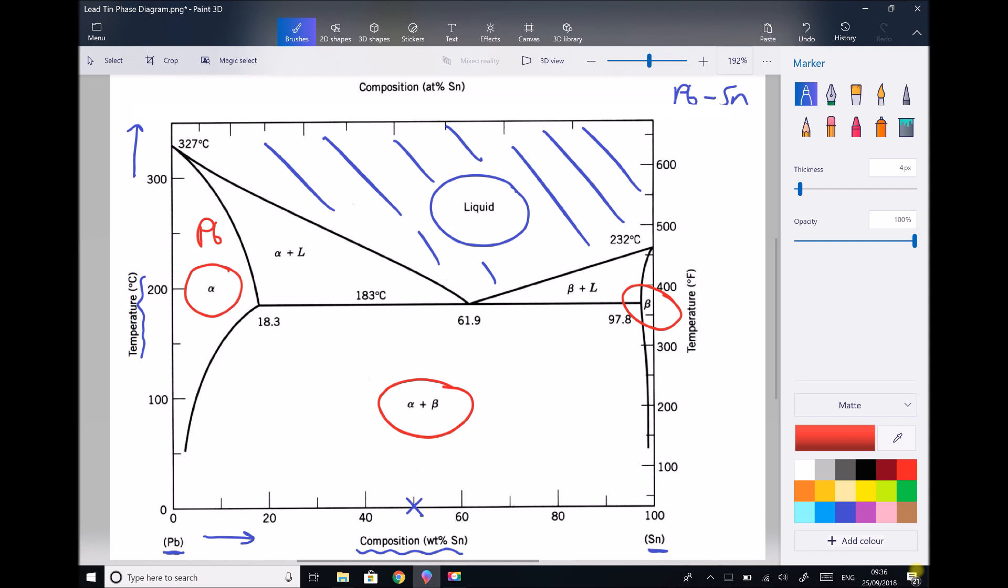By contrast on the right hand side the much smaller region beta is primarily tin. It will be tin with a small amount of lead dissolved. We know that it's primarily tin because up here we're sitting at 98, 99 and 100% tin. So it's almost pure tin with a very small amount of lead dissolved.